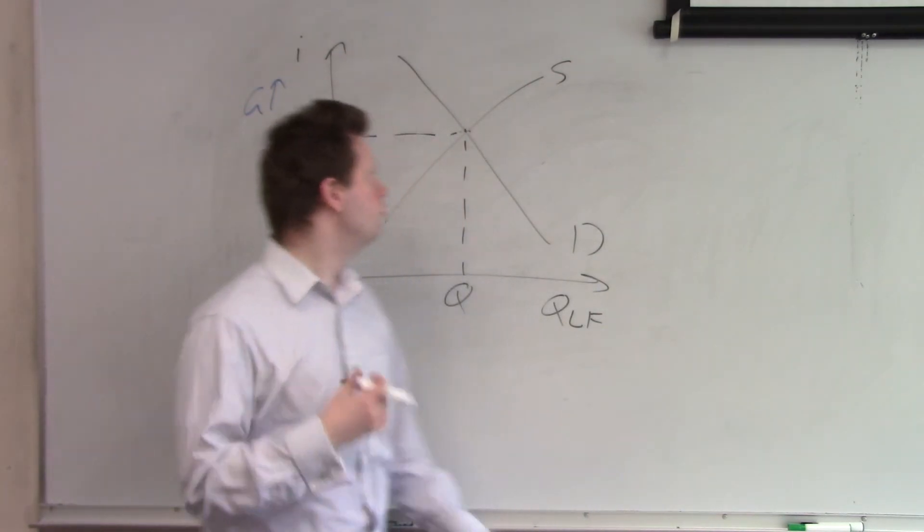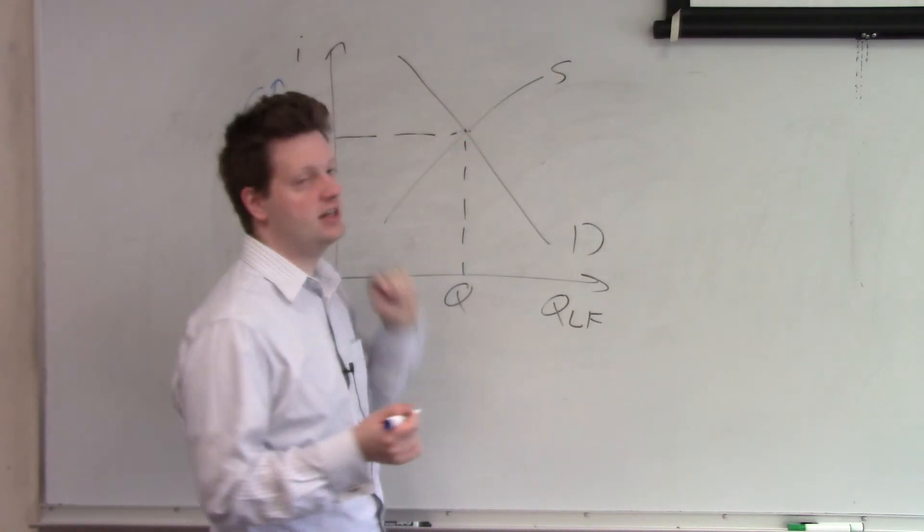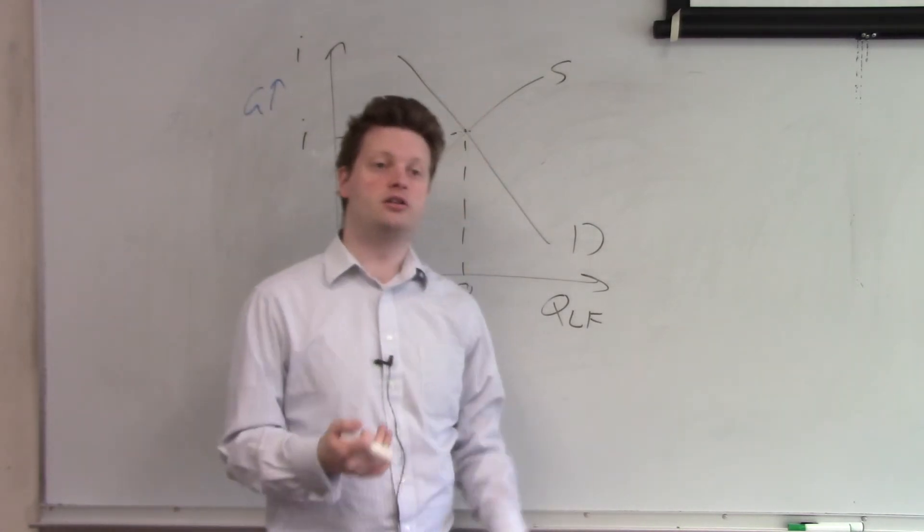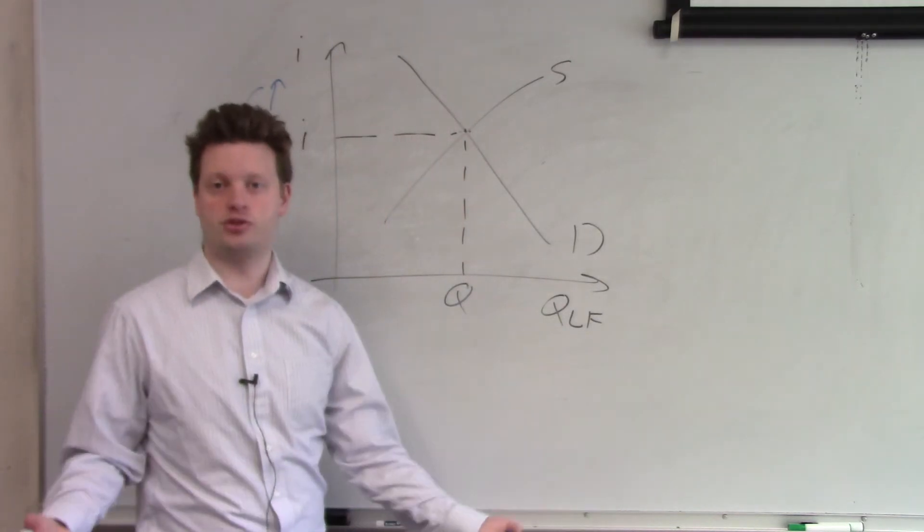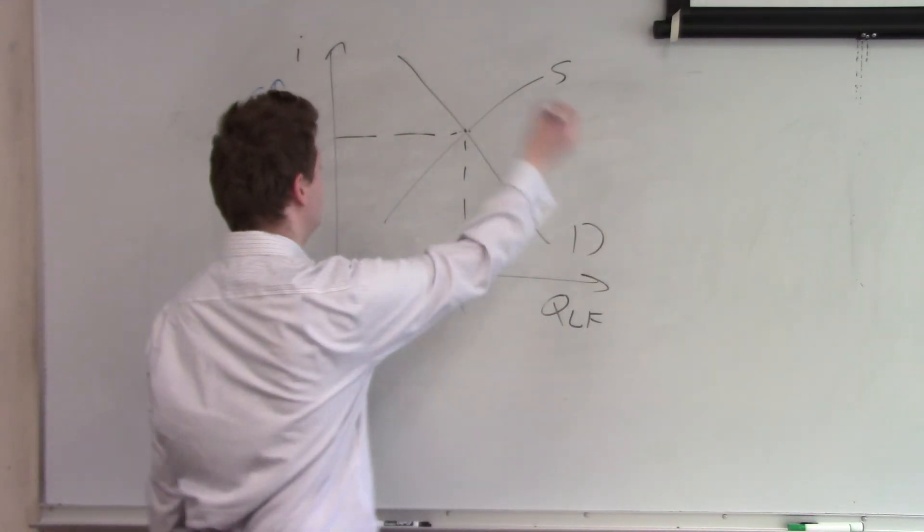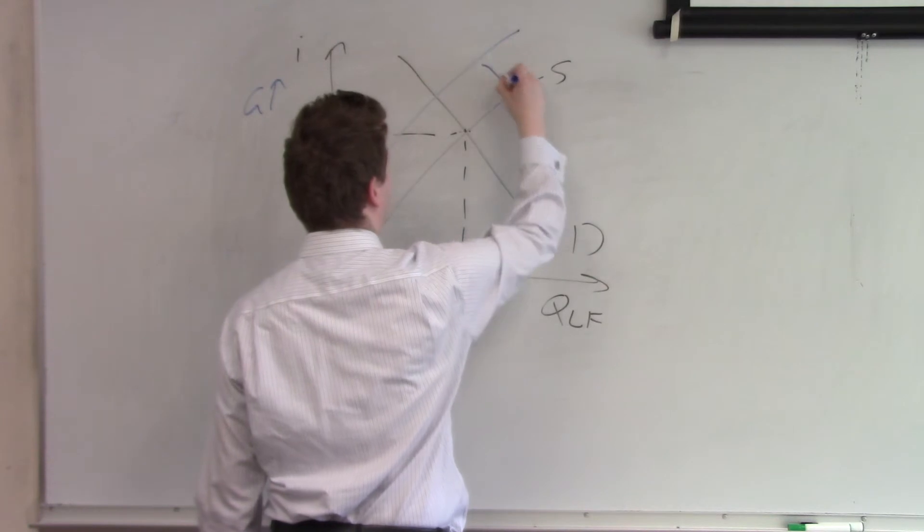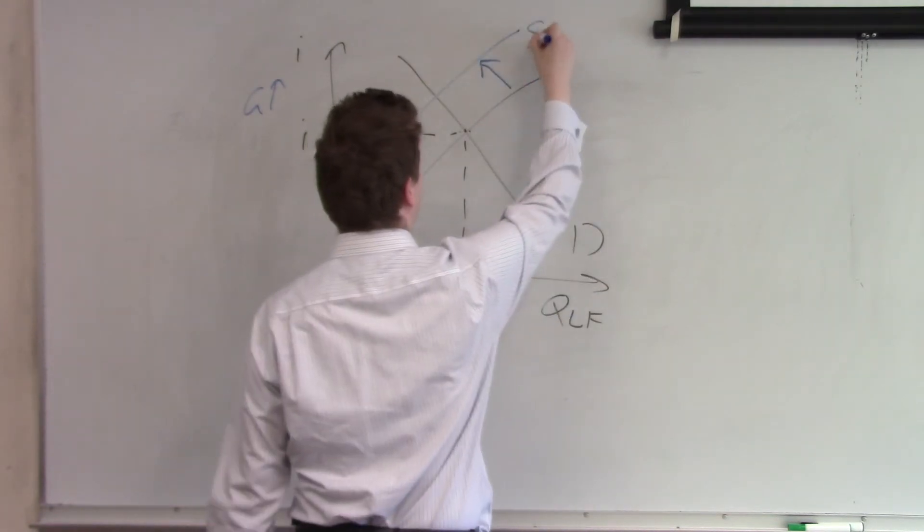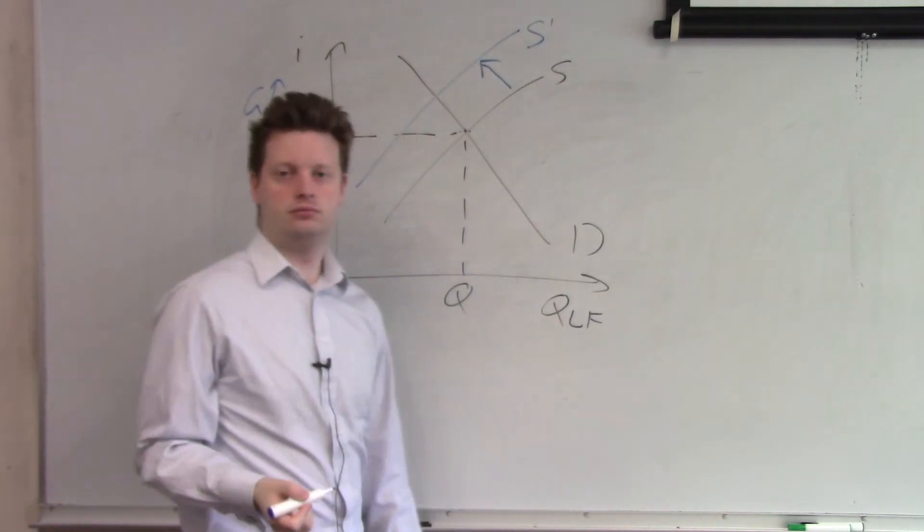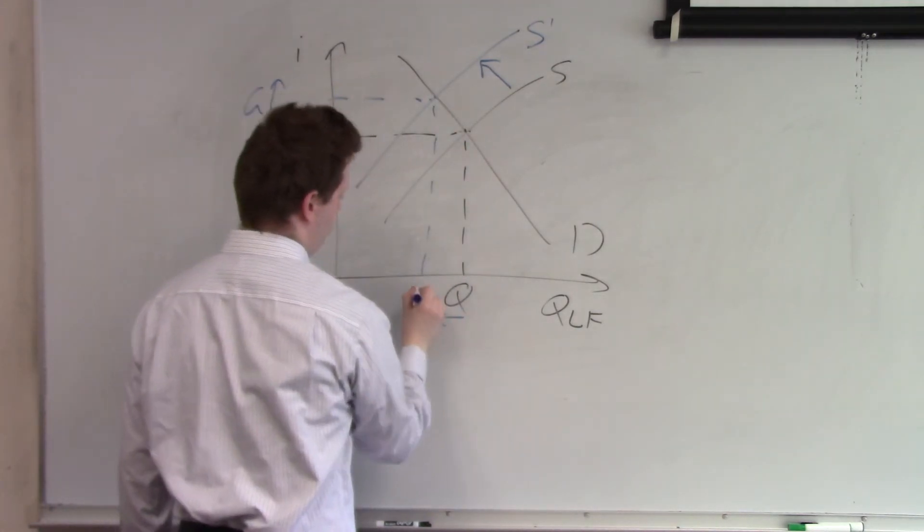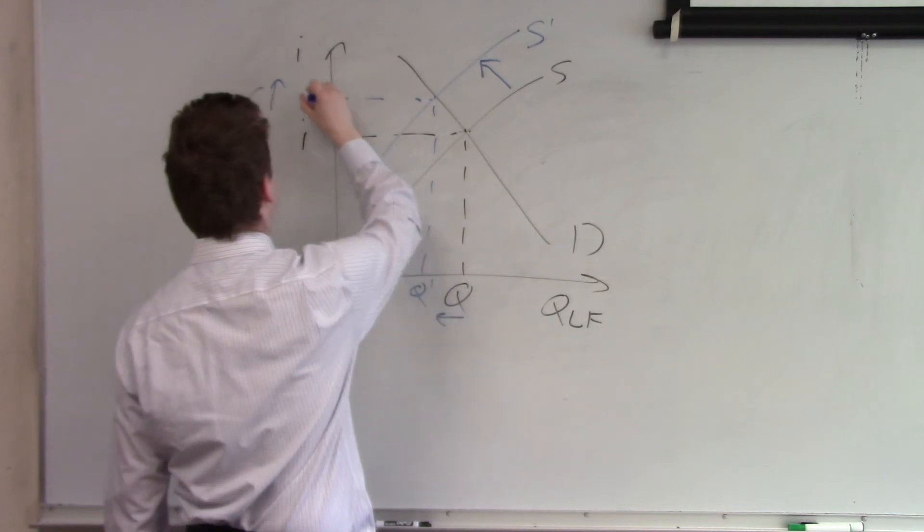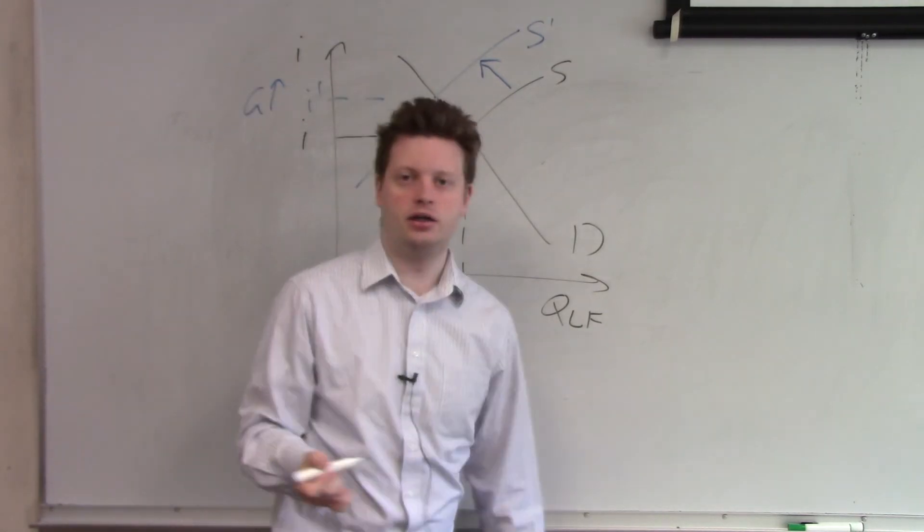So what we then know is, if households then give some of their money to the government, there's not as much money available anymore to give to firms. So we have supply shifting to the left. And if you have supply shifting to the left, we have a reduction in loanable funds and we have a higher interest rate.